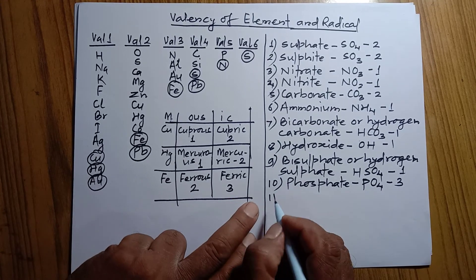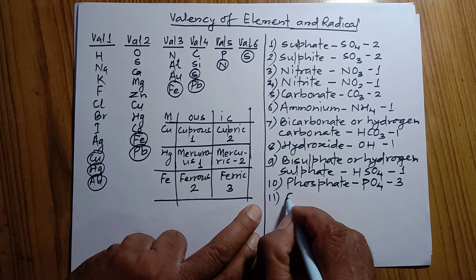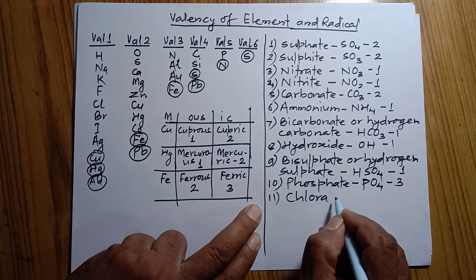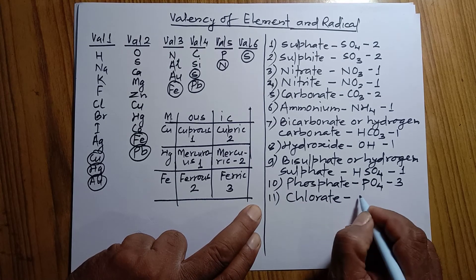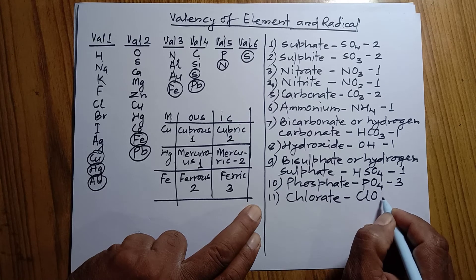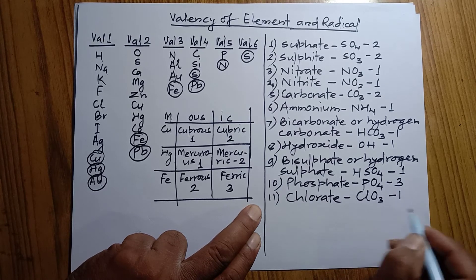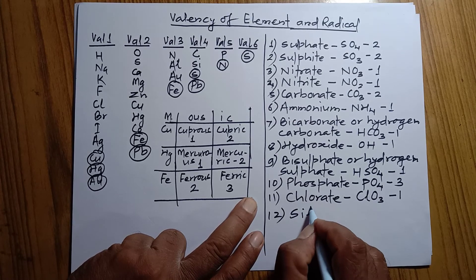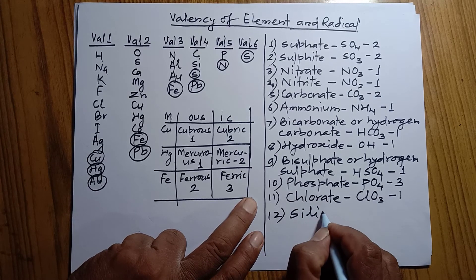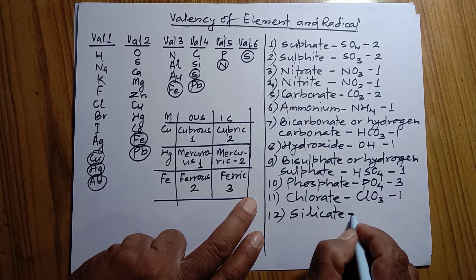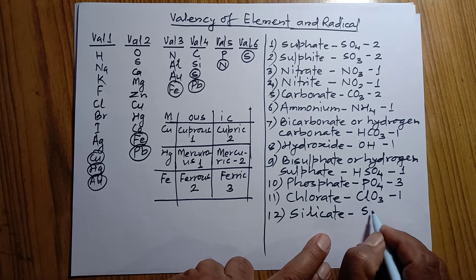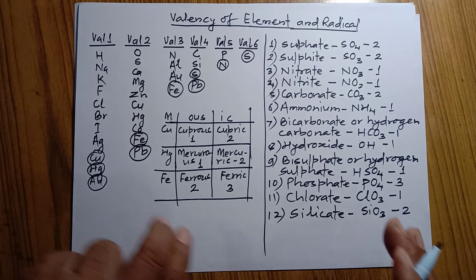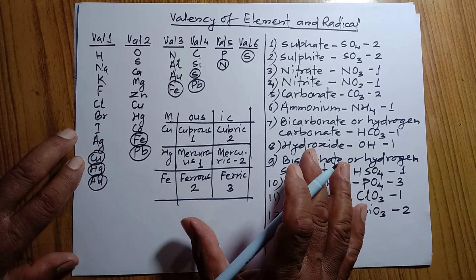Chlorate (C-H-L-O-R-A-T-E): formula is ClO₃, valency is 1. Silicate (S-I-L-I-C-A-T-E): its formula is SiO₃ and its valency is 2.